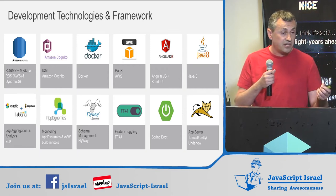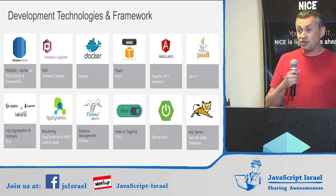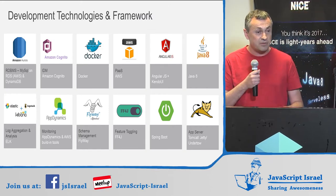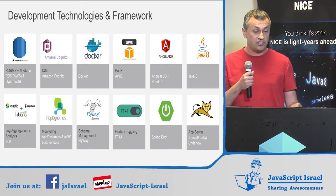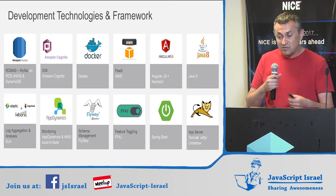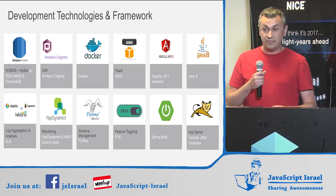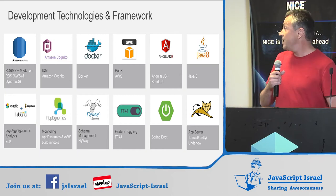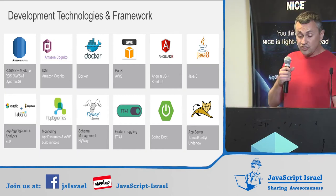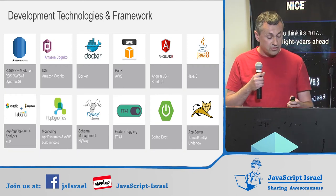Our technology stack: as I mentioned, NICE used to be a .NET shop. But currently, with all new projects, we are pure open source — Java and Python. We are moving away from .NET into this space. As you can see on this slide, the technologies include JavaScript and Docker, as I mentioned before.